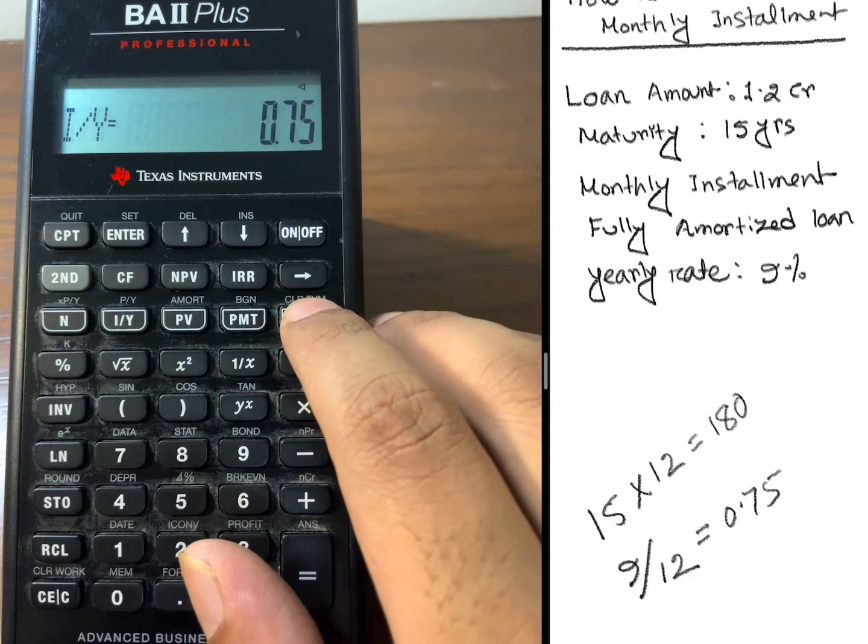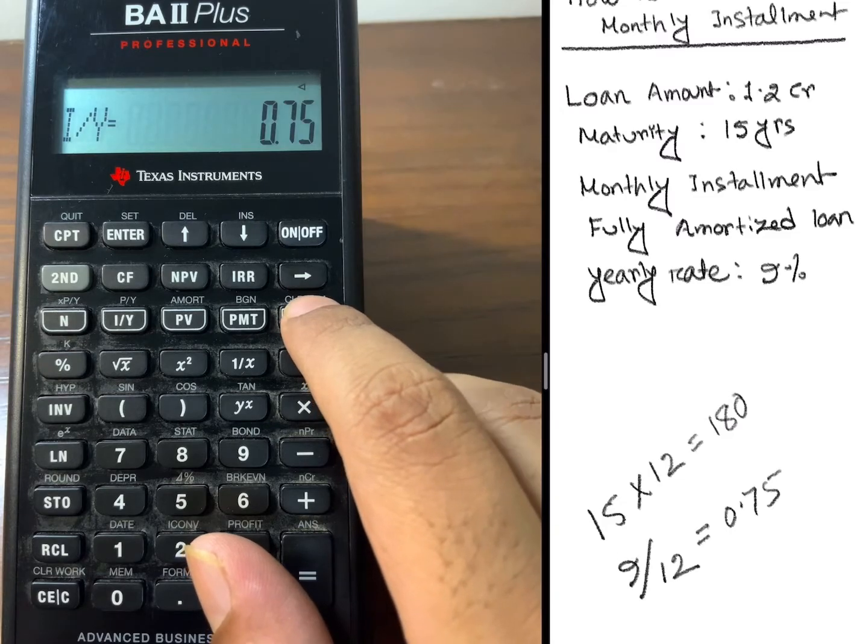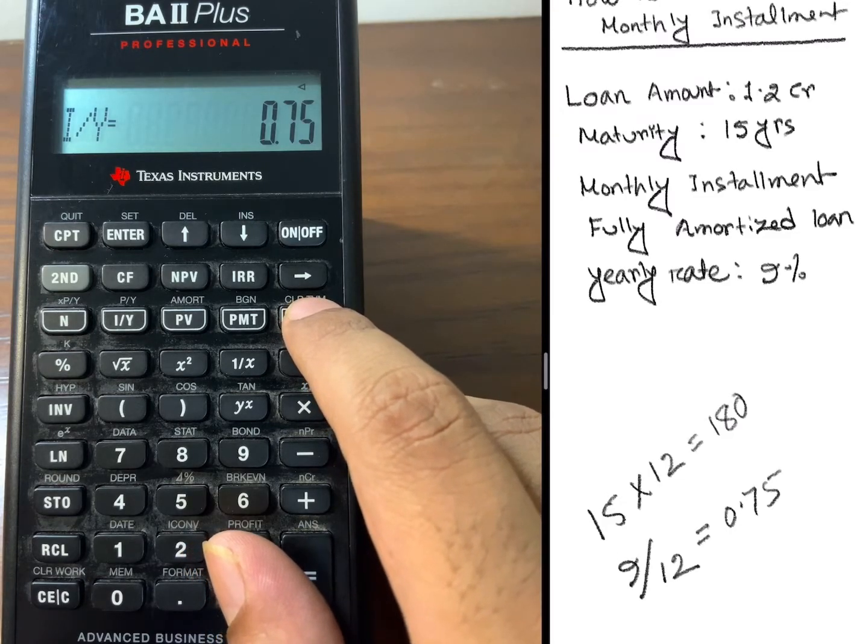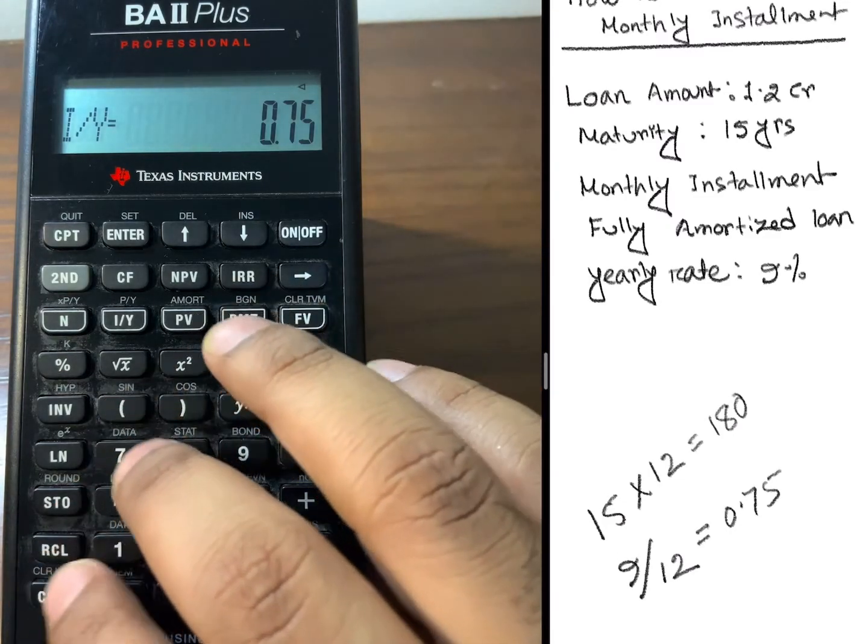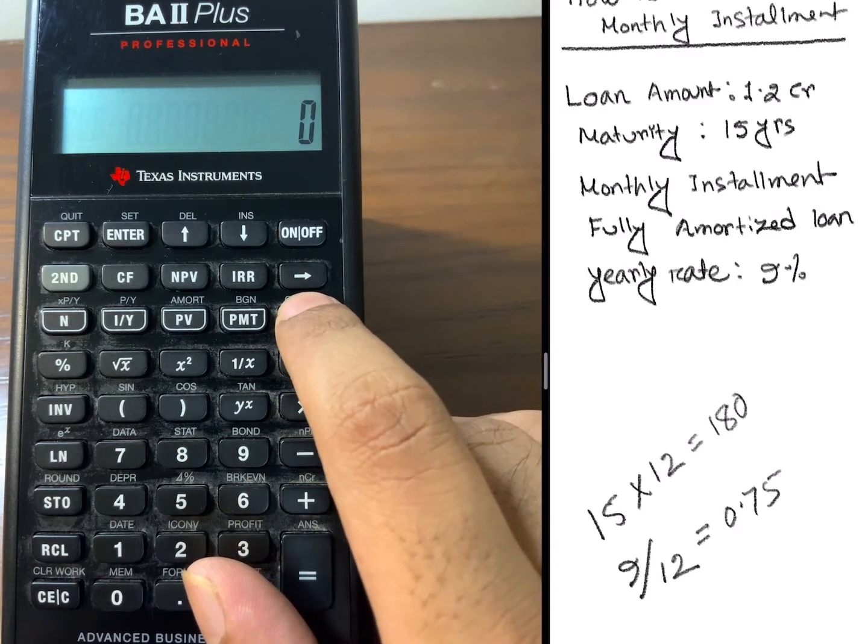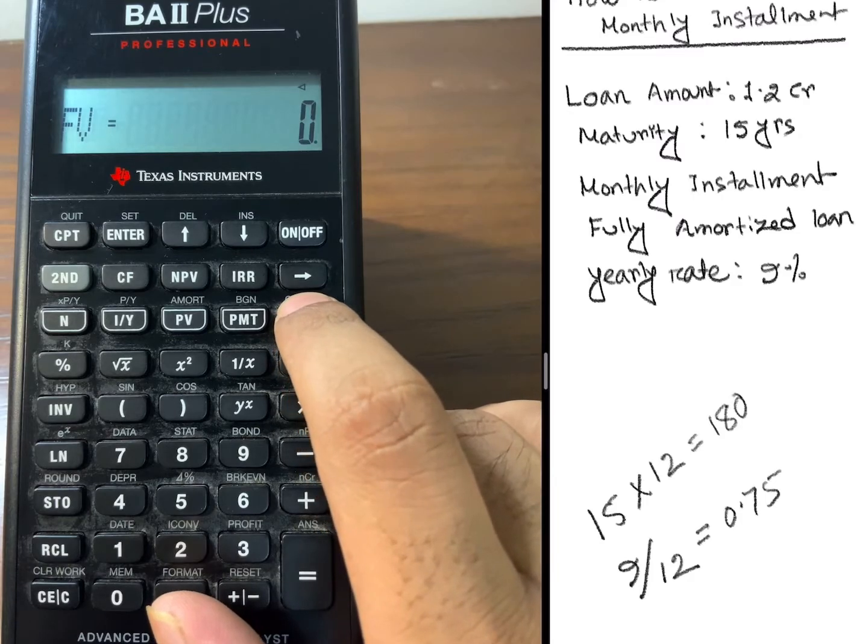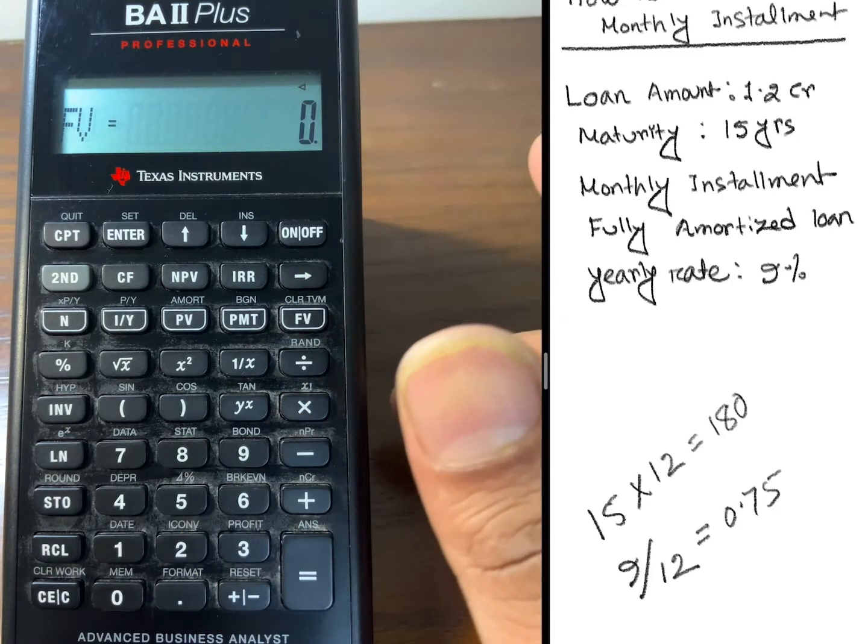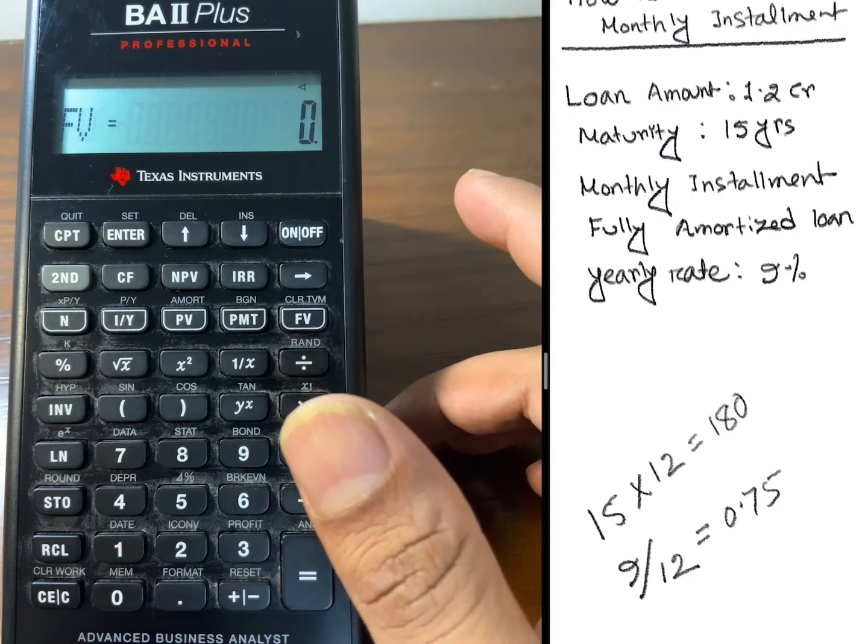Since it's a fully amortized loan, all the interest and the principal will be paid with the monthly installment. So there will be no further amount needed to be paid at the expiry of the loan. I need to press 0 and future value, but I need not do that because I already cleared the time value of money, so 0 is already there.